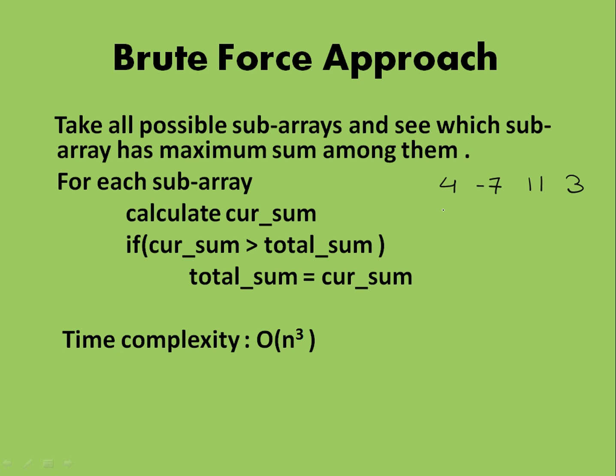What are all the possible sub arrays of it? You can have 4, 4 minus 7, or you can have 4 minus 7, 11, 4 minus 7, 11, 3, minus 7, 11, 3, minus 7, minus 7, 11, minus 7, 11, 3, 11, and then 11, 3, and finally 3.